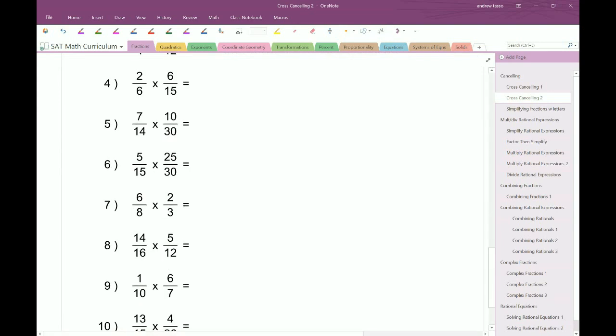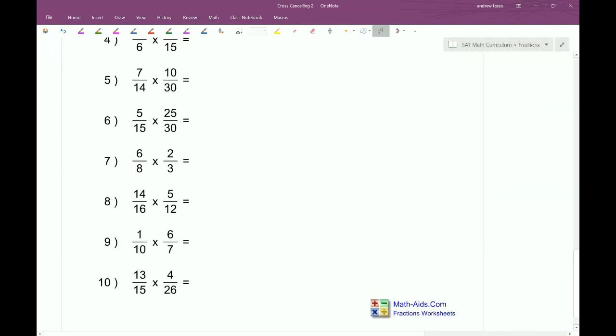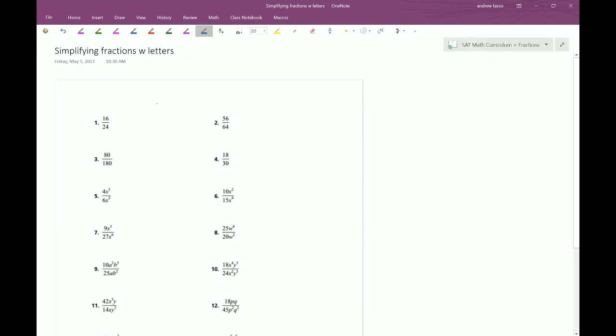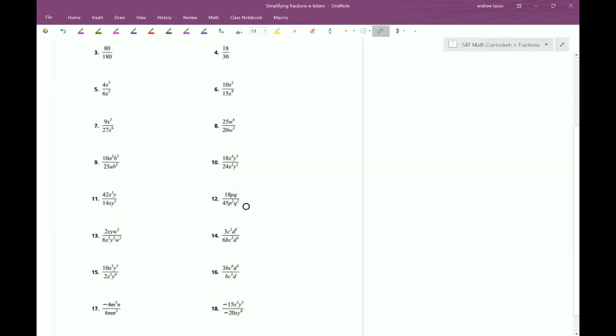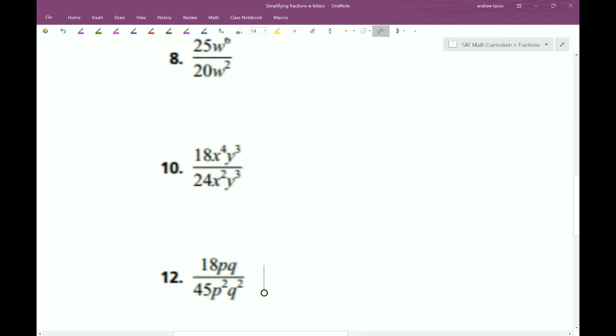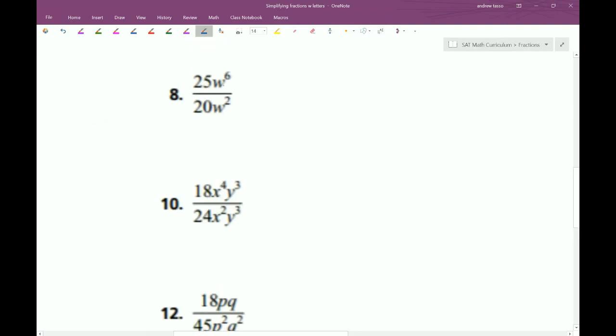Let's see what else we have here. Maybe some ones that have a little bit bigger numbers. So here we're getting letters coming into the picture. The rule here, we have to use our exponent rule, where we have w to the sixth over w squared. We would use our subtraction of exponents. So we'd end up with w to the fourth power. And 25, we can break into 5 times 5. 20, we break into 5 times 4. The 5s can be canceled. And we'll end up with 5w to the fourth over 4.